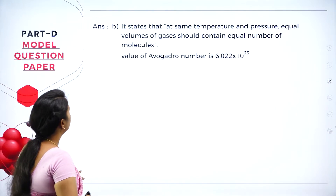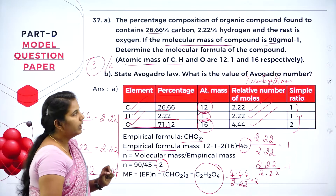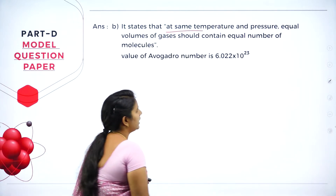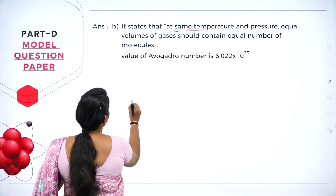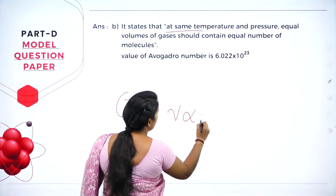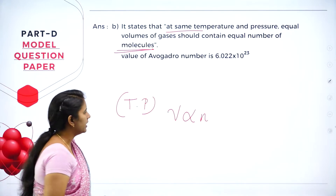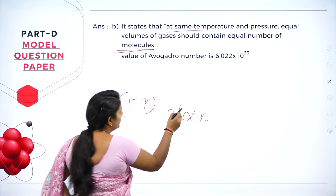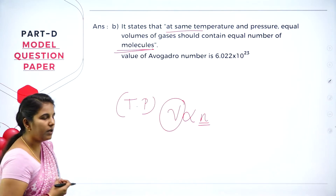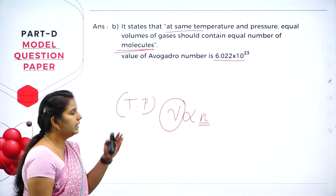Coming into Part B of the second question: State Avogadro's law and give the value of Avogadro's number. Avogadro, a scientist, stated that at constant temperature and pressure, equal volumes of gases contain equal numbers of molecules. So the volume of a gas is directly proportional to the number of moles of the gas. The value of Avogadro's number is 6.022 × 10²³.